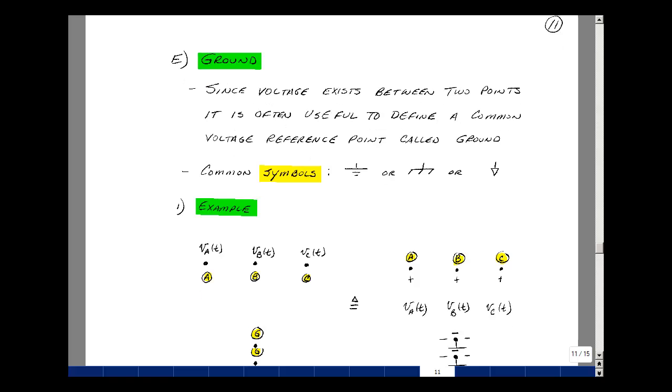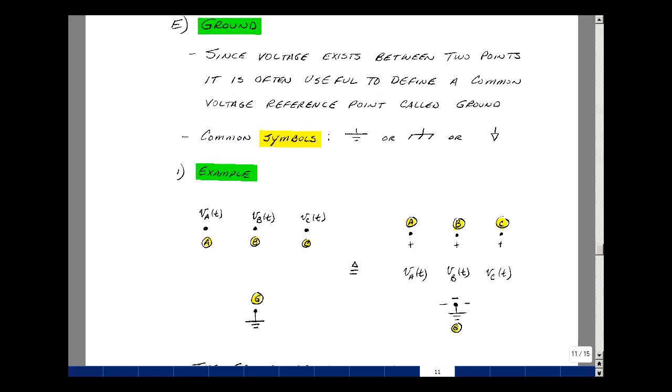Suppose I have three connection points and a fourth terminal. We often will just label these points as a voltage, say V sub A, V sub B, and V sub C. But what this really implies is that there's a voltage between points A and ground, B and ground, and C and ground.